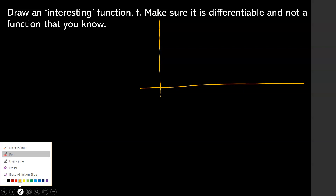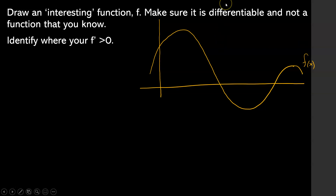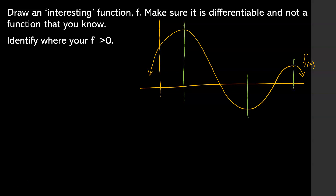So we're going to draw a graph. We want to draw a differentiable function, which means we also need a continuous function. We're going to name this function f. So where is our f prime positive? f prime is the slope of f. How can we find out where f prime is positive? f prime is positive when f is increasing. So let's just break this up — these are the places where things change. To the left of whatever this number is, f prime is greater than zero, which means f is increasing.